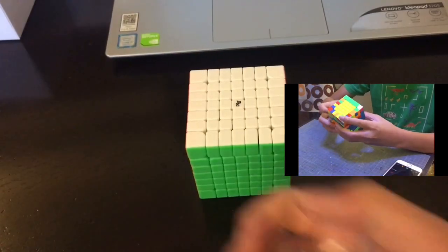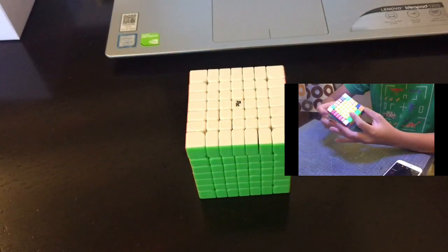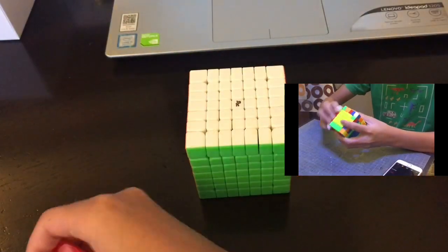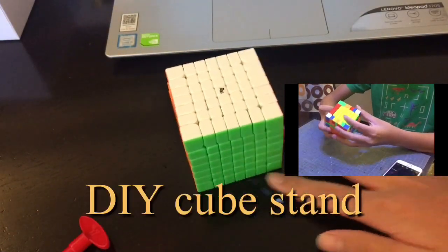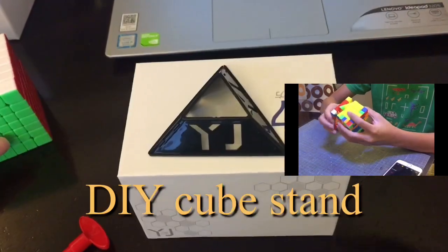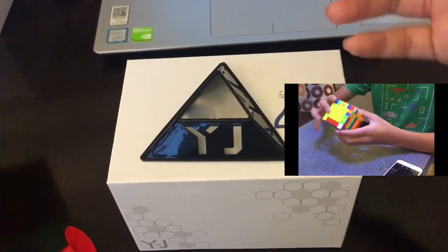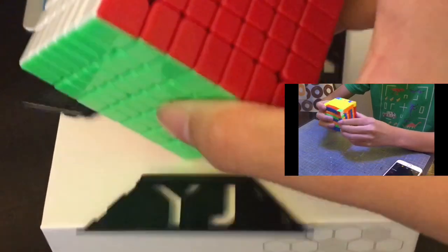For accessories, it comes with spare springs and magnets, it also comes with a screwdriver, which is nice, and a DIY cube stand. I mean, a DIY cube stand is a pretty cool idea, but however, it just cannot withstand the weight of a 7x7, so it doesn't work.